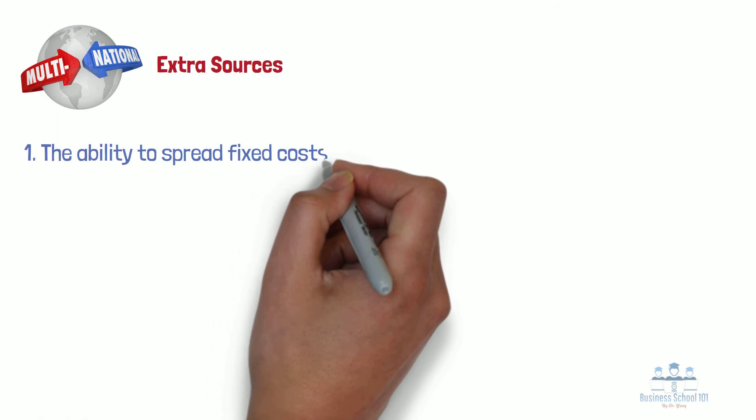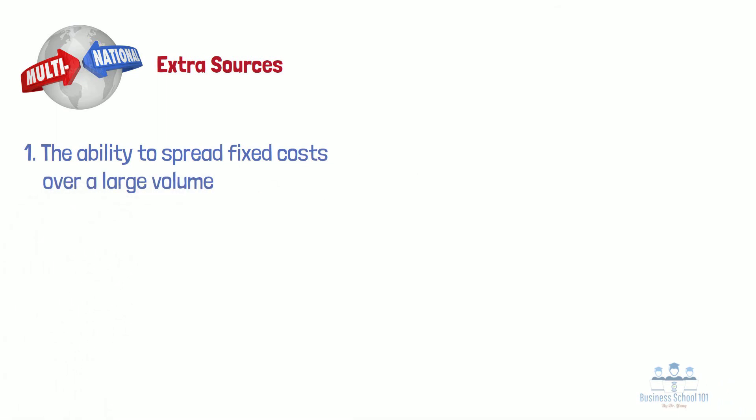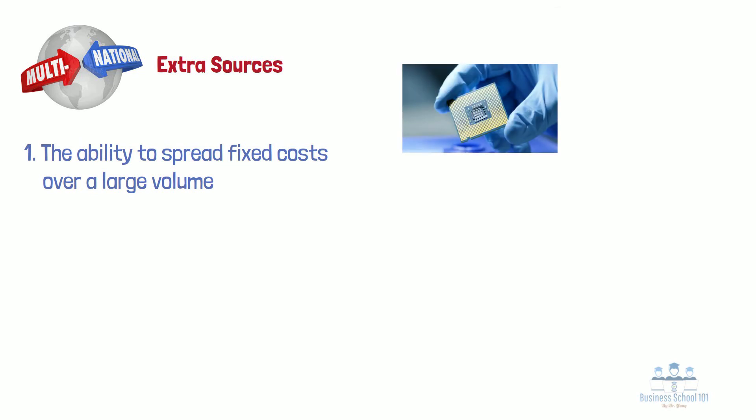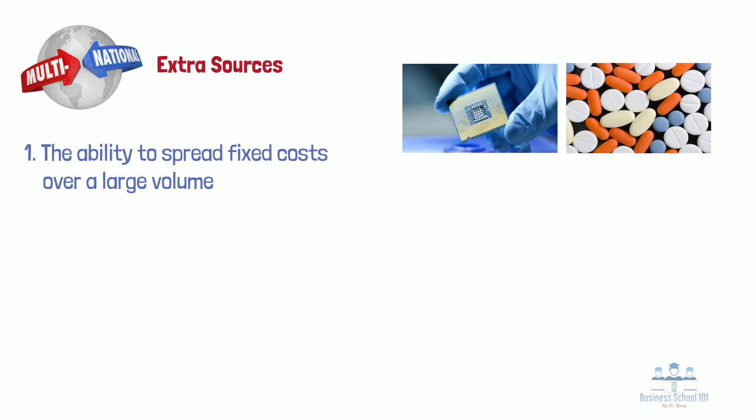For firms wanting to expand globally, economies of scale have a number of extra sources. One is the ability to spread fixed costs over a large volume. For example, the fixed cost of establishing a new production line to manufacture semiconductor chips normally costs over $1 billion. Similarly, developing a new drug and bringing it to market could cost pharmaceutical companies hundreds of millions of dollars and take decades. The only way to recoup such high fixed costs may be to sell the product worldwide, which reduces average unit costs by spreading fixed costs over a large volume.